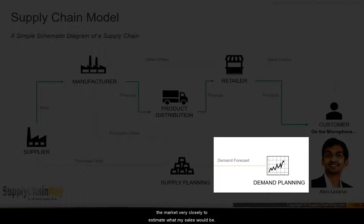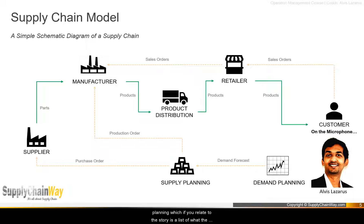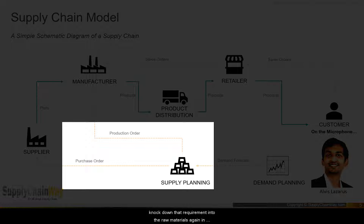The third element involves the use of forecasting tools to arrive at a demand forecast. The demand forecast is the output from demand planning. Relating back to the story, the list of what the son needs for lunch is essentially the demand forecast.